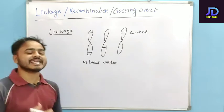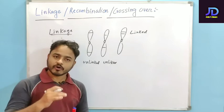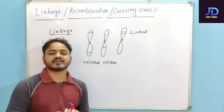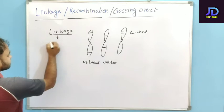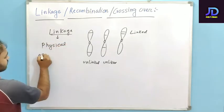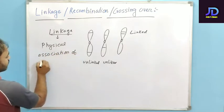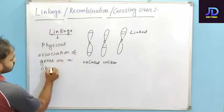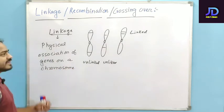Linkage is the physical association of genes on a chromosome. This phenomenon is called linkage — the physical association of genes on a chromosome is called linkage.